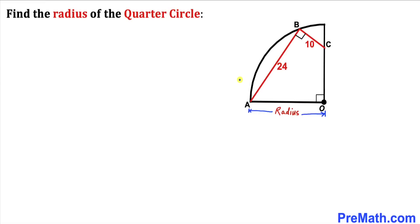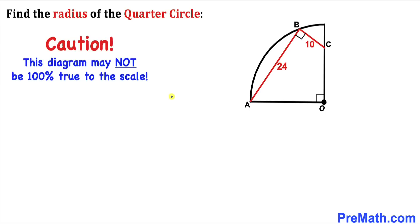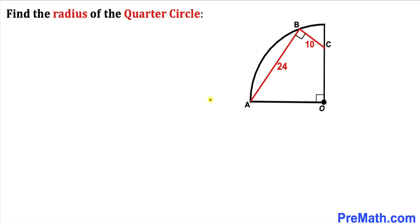Welcome to pre-math. In this video we have a quarter circle where line segment AB is 24 units and line segment BC is 10 units, such that the angle between them is 90 degrees. We are going to calculate the radius of this quarter circle. Please don't forget to give a thumbs up and subscribe. Note that this figure may not be 100% true to scale.